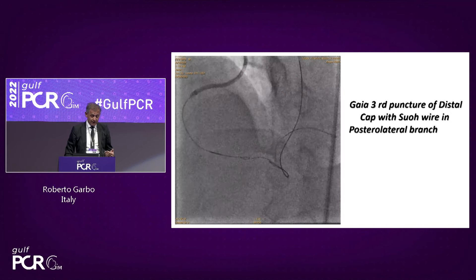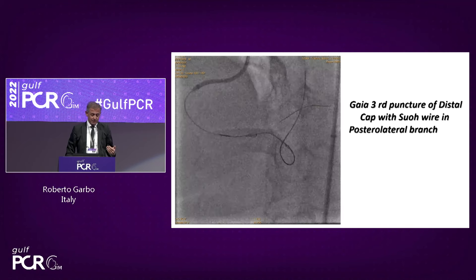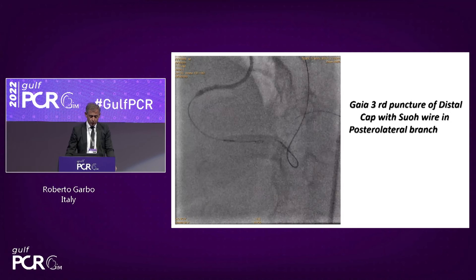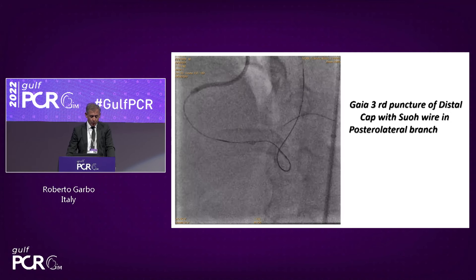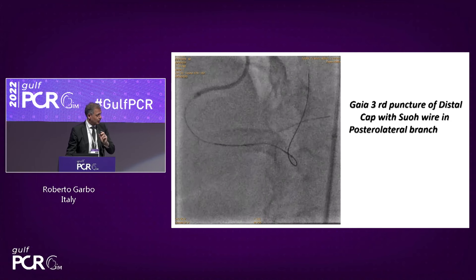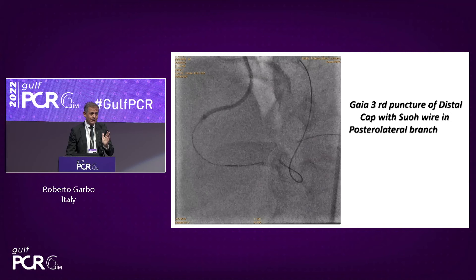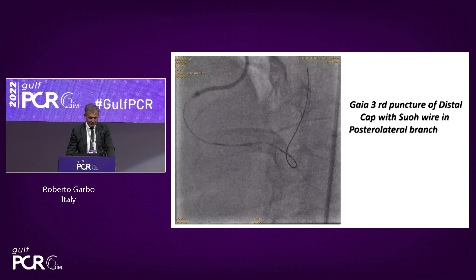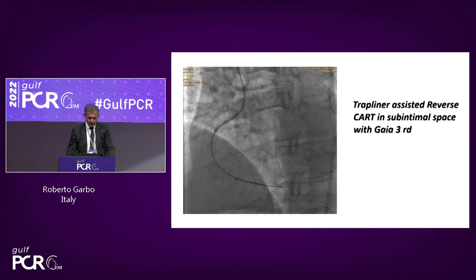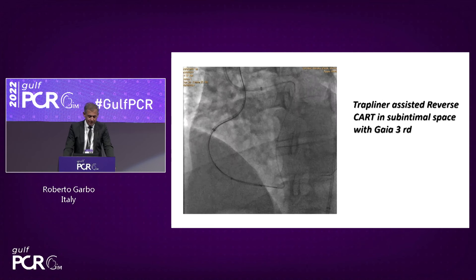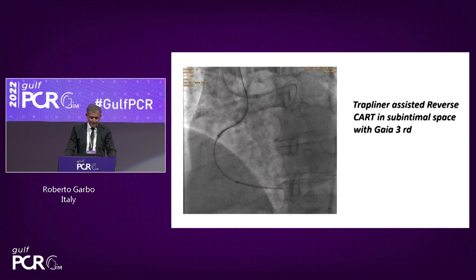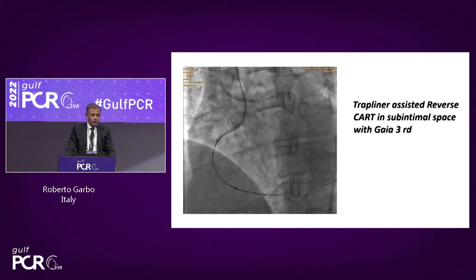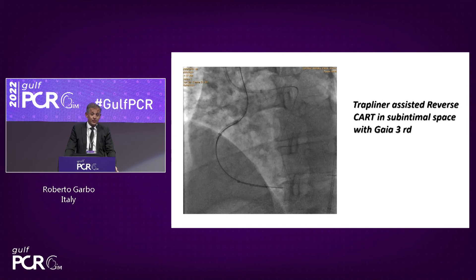This is the Gaia 3 puncture of the distal cap, with the SWO wire in the posterior branch. From antegrade, the Gladius marker wire is visible, so we know exactly where to puncture from retrograde. We are in the same space. Then from antegrade, I used a Trapliner for a Trapliner-assisted reverse cut. With a guide extension, it is much easier and faster to make the connection — in the past, 15 years ago when we started retrograde CTO, you had to advance all the way to the proximal right.